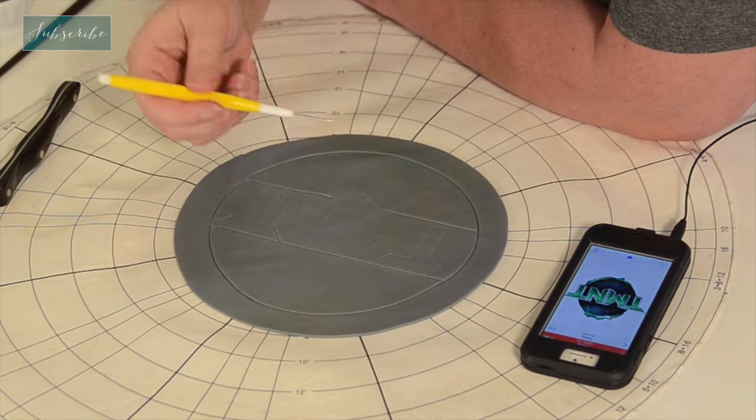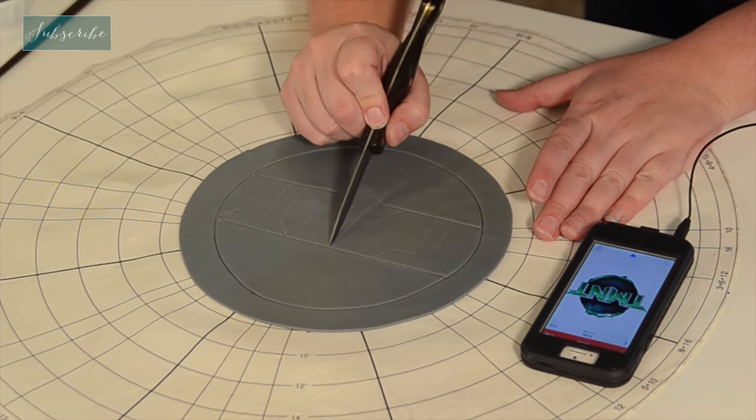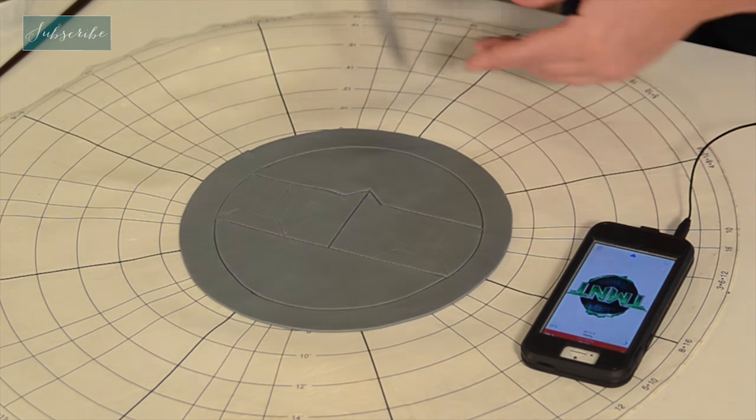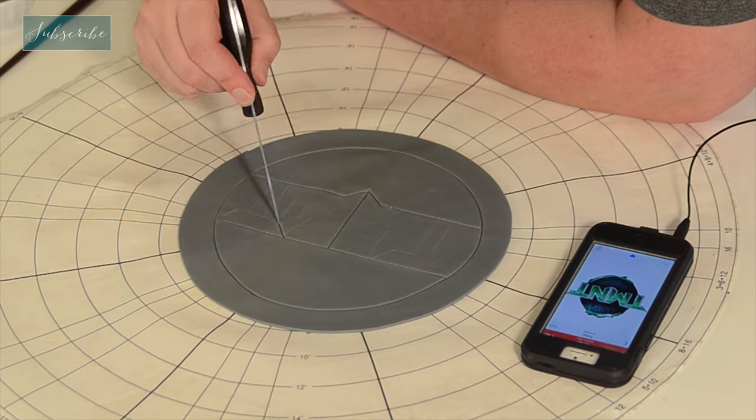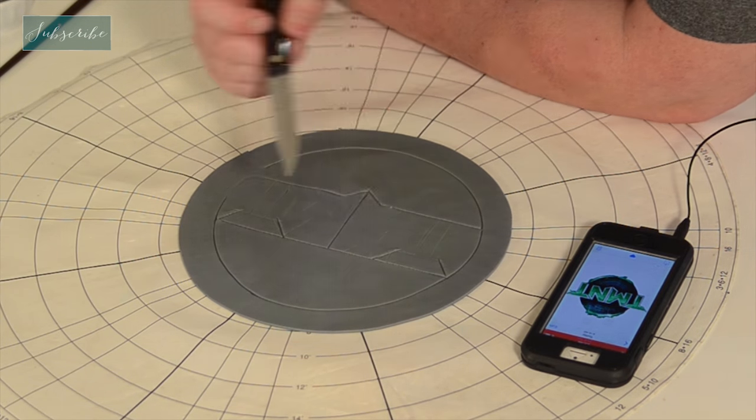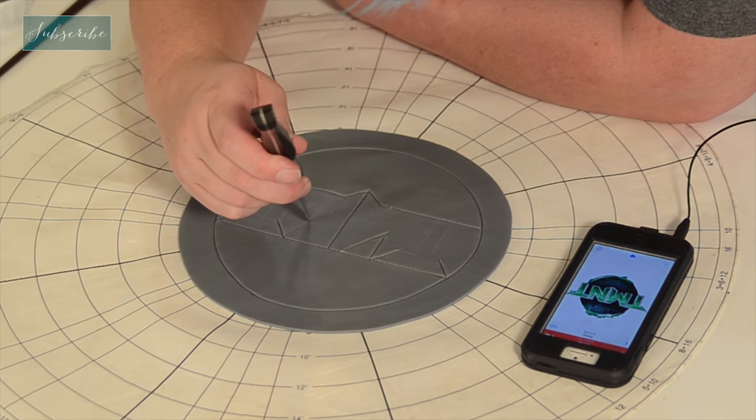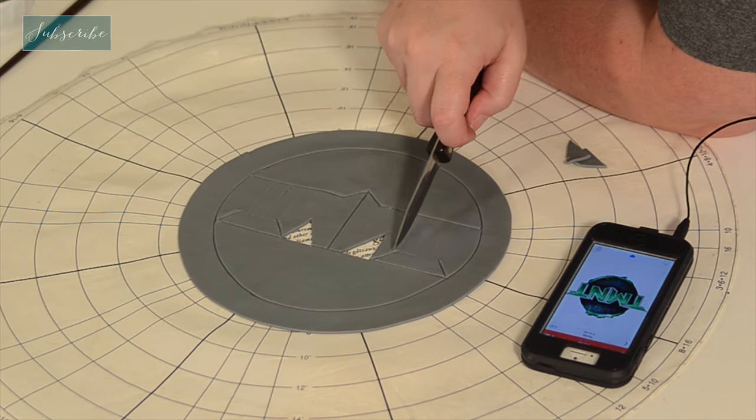Noticing the details like that the T's have angles across the top, that there's that point down the center between the M and the N and stuff like that is really what's going to make your logo look super authentic and really great.